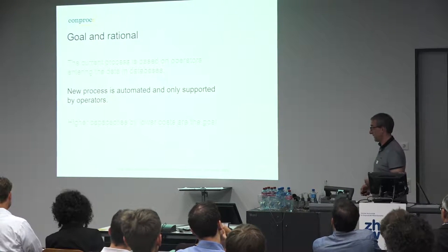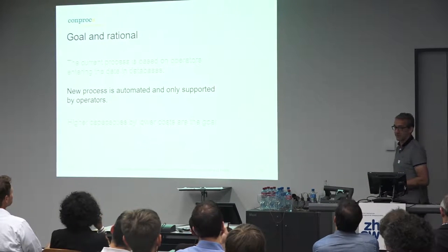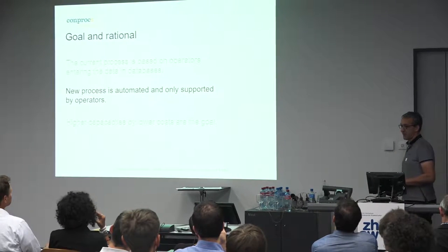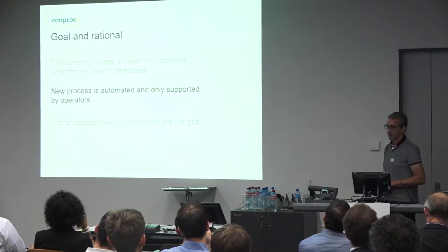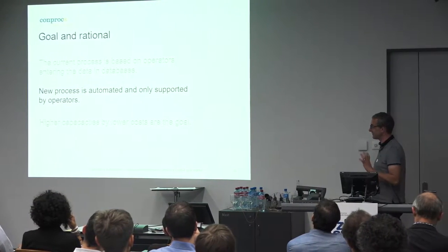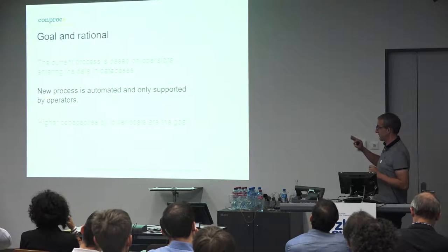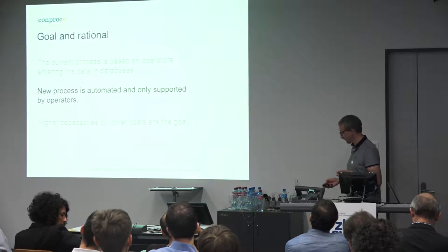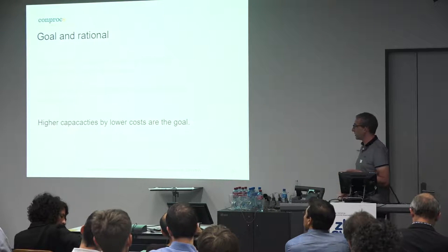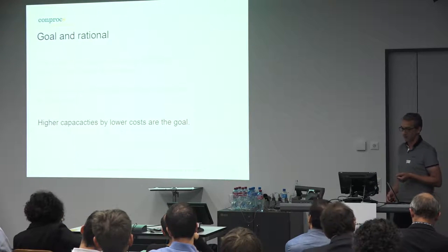What we try to do is come up with a new, automated process which is at the end supported by an operator. It's not possible to fully automate such a process — it's too difficult. But we try to achieve a high grade of automation. The final goal is the ability to have higher capacities and lower costs.